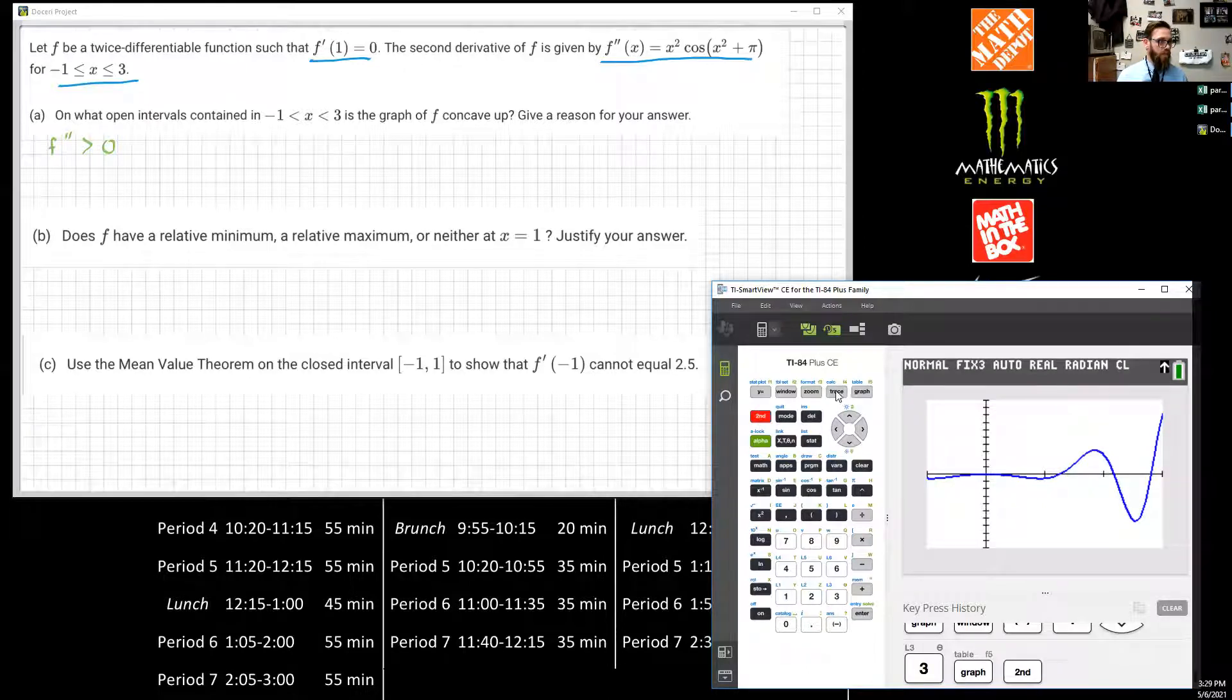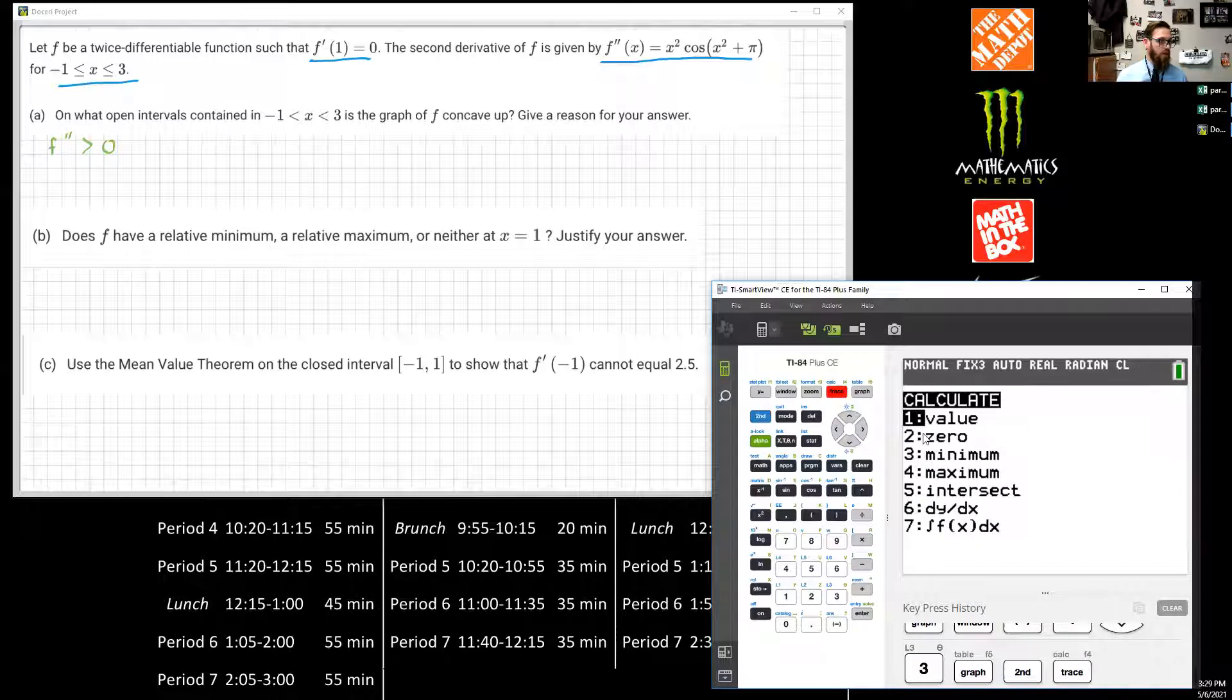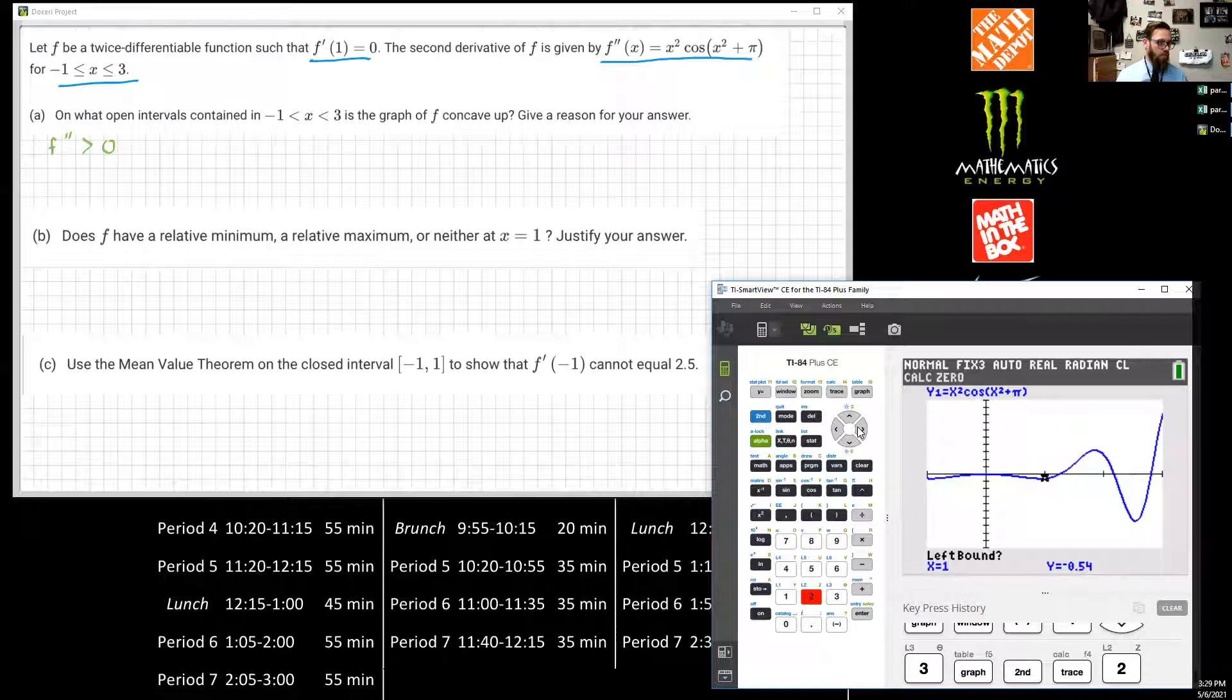So in order to do that, what we do is we hit 2nd, and then Trace. Trace would give you the calc option, and then we want zeros. So we're going to select 2, and what my calculator does is it has me find a left bound and then a right bound. So I just need to be to the left of the first x-intercept and press Enter, and then I got to move this over to be on the right side of the x-intercept, press Enter, and then it says, where do you want me to guess? Since there's only one zero there, I don't have to move this cursor over close to it, but sometimes you do if you have more than one x-intercept in the boundary that you chose. So I hit Enter one more time, and it looks like one of our zeros is 1.253.